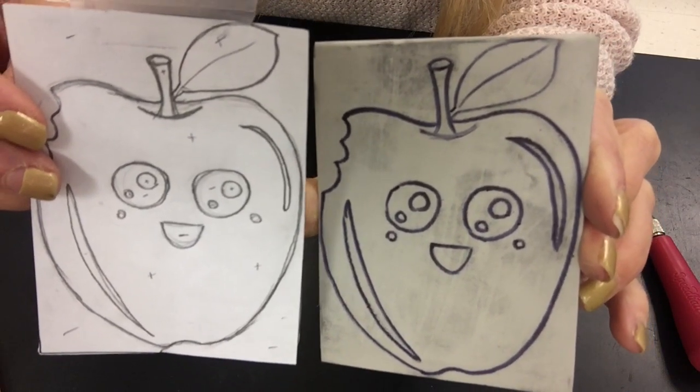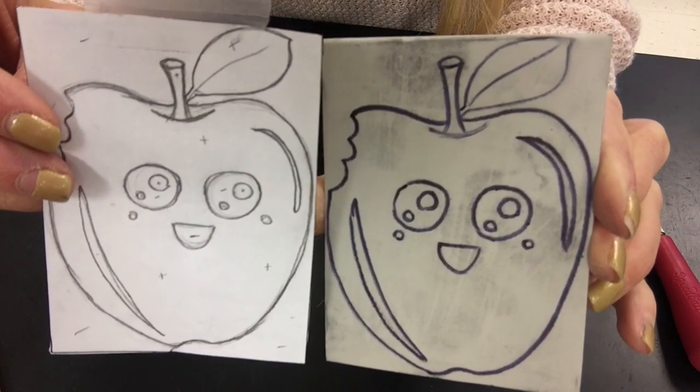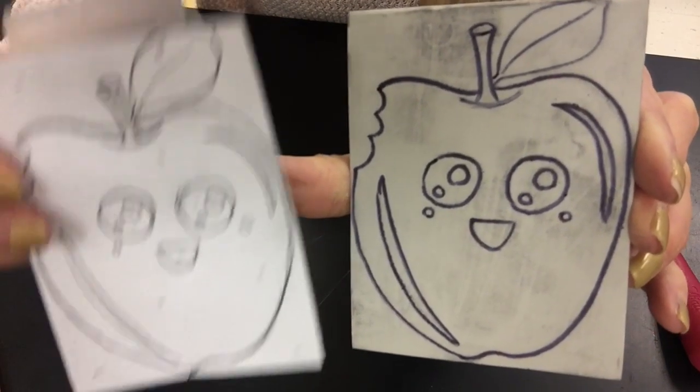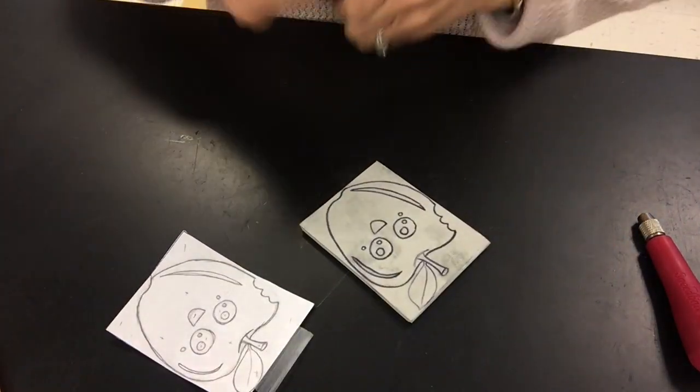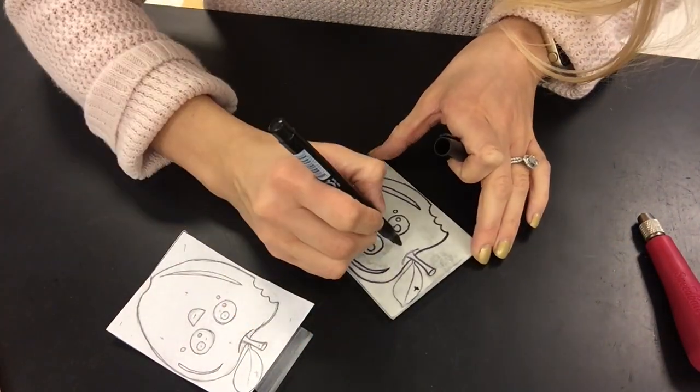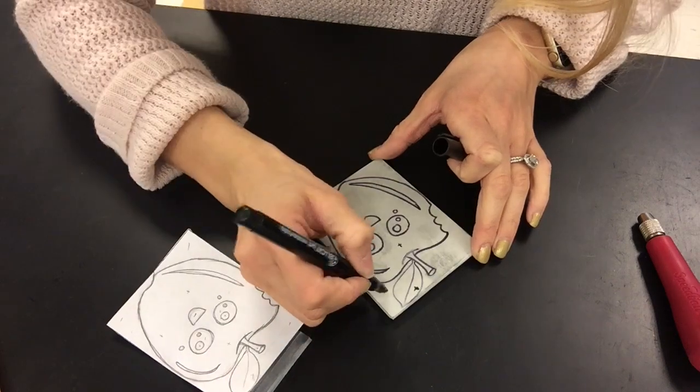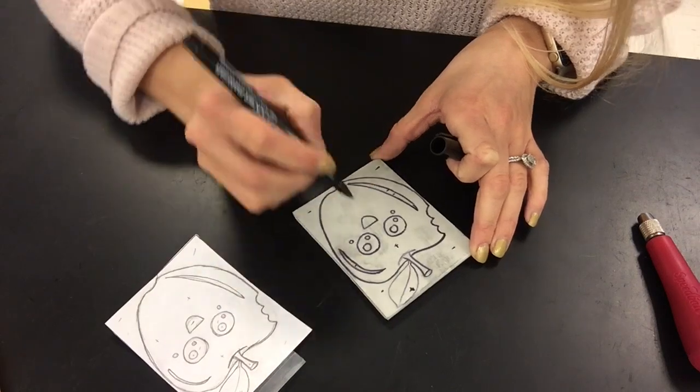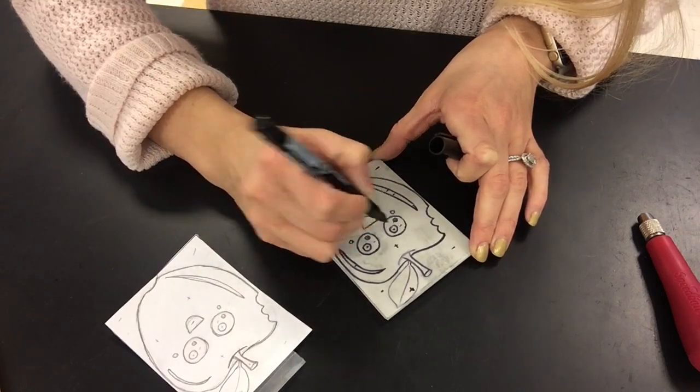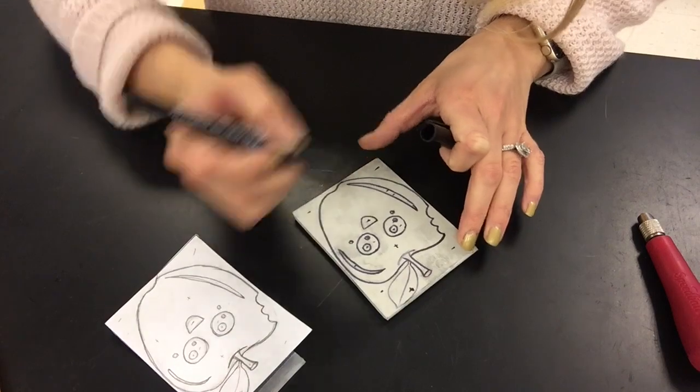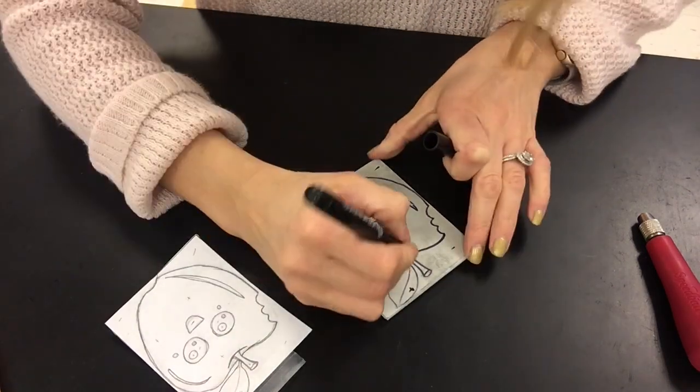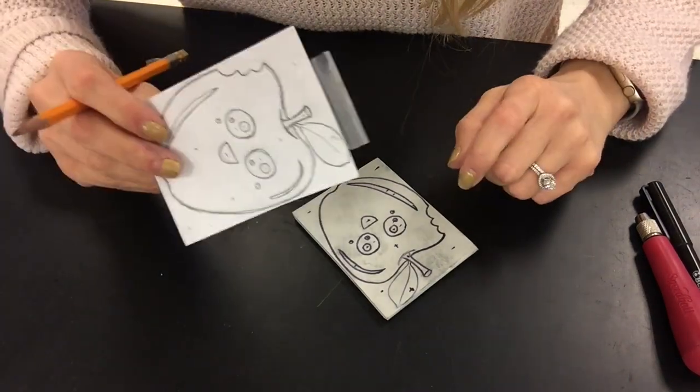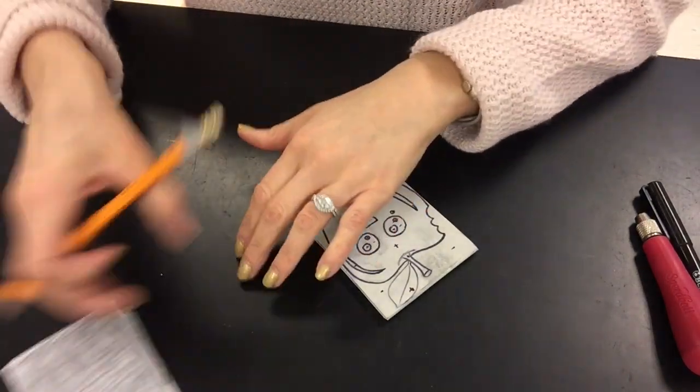And then we're going to label where the positive and negative spaces are going to be, just like you did on the sketch paper. Just keep these really small so that they're not taking over your project. And this is why you want to hang on to this little sketch paper because just in case you forgot to write anything down from this onto this, you want to make sure you hang onto it.